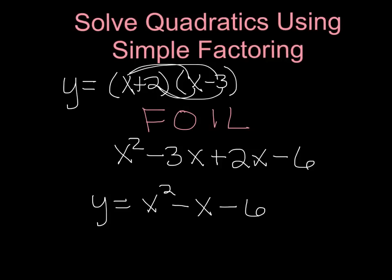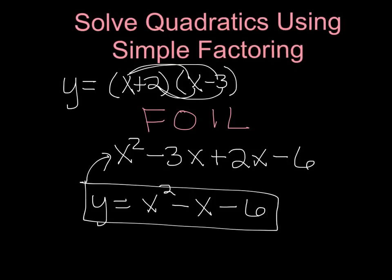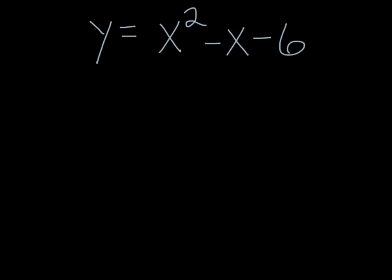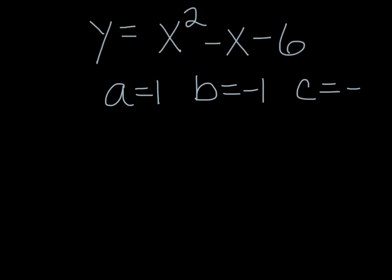Now what we're going to learn today is how to factor — how to go back from standard form to a four-termed expression that we can put into two factors. The best way to explain this is to go through an example. Say we have y equals x squared minus x minus 6. Well, a is 1, b is negative 1, and c is negative 6 — that's for our ax squared plus bx plus c.